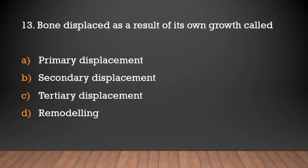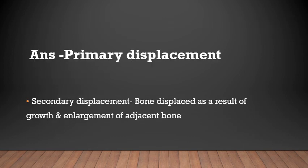Bone displaced as a result of its own growth is called: primary displacement, secondary displacement, tertiary displacement, or remodeling. Answer: Primary displacement. In primary displacement, bone is displaced as a result of its own growth. In secondary displacement, bone is displaced as a result of growth and enlargement of an adjacent bone.